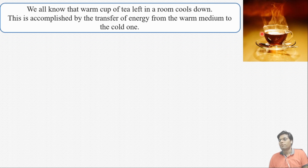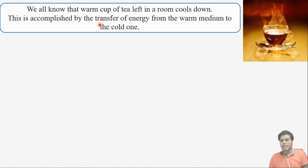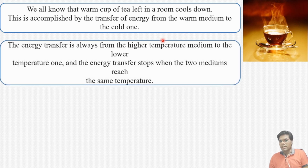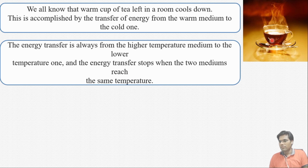Suppose we have one cup of tea whose temperature is much higher than the surrounding. If we put this tea in the surroundings, the warm cup of tea in the room cools down — the temperature of the tea will decrease. This is accomplished by the transfer of energy from the warm medium to the cold one. According to the second law, energy transfer will always go from the higher temperature medium to the lower temperature one, and will stop when both reach the same temperature. After some time, the temperature of the hot tea will equal the surrounding temperature, because heat flows from the hot system to the cold surrounding.